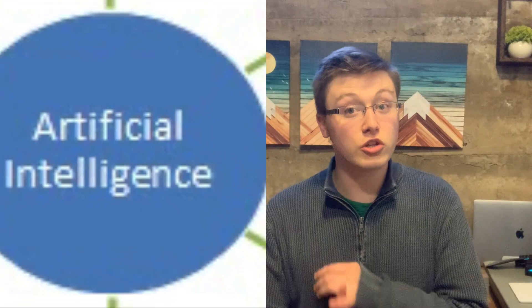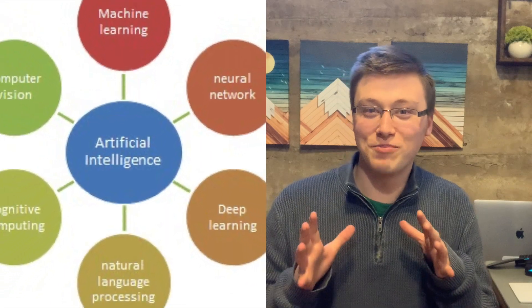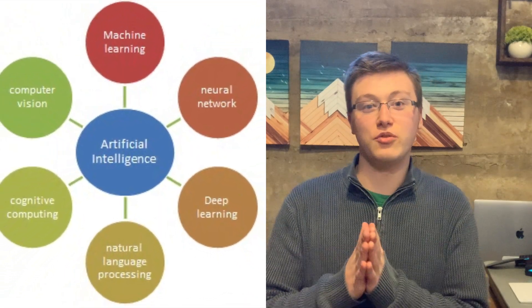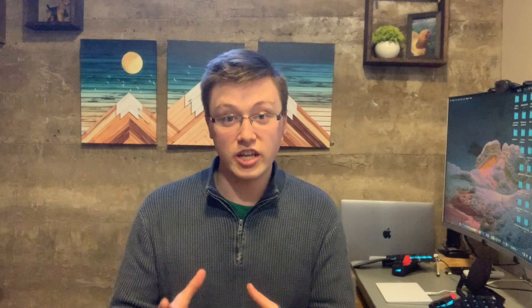Today we're going to be talking about a very specific piece of Artificial Intelligence from a company we're about to discuss. First, I'd like to talk briefly about some of the fields that have developed because of the growing popularity of AI. A few of those fields include machine learning, neural networks, and also something called computer vision, which is what we're going to be talking about a lot of today.